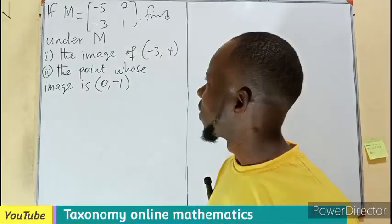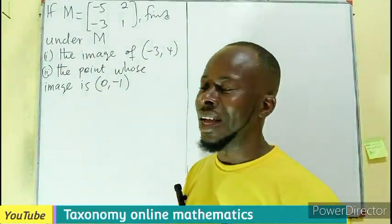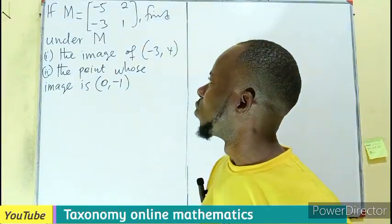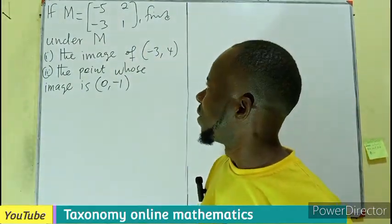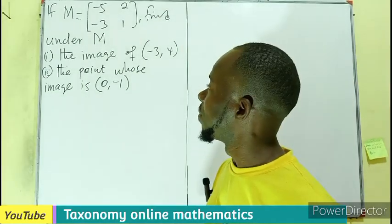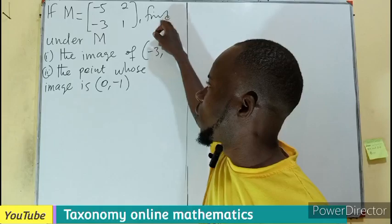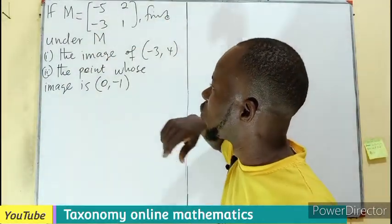Welcome. We have a question under linear transformation which makes use of matrices. So if M is a 2 by 2 matrix: -5, 2, -3, 1, we have to find under M, which is a matrix 2 by 2,